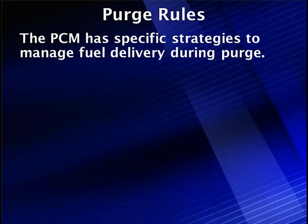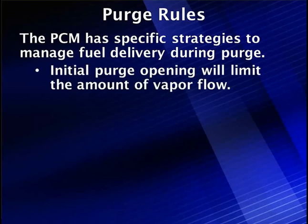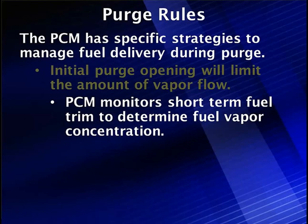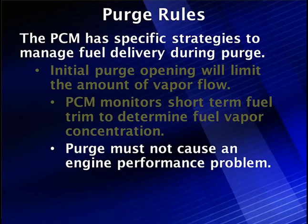The PCM has specific strategies about running purge. We're going to run purge in conjunction with fuel delivery. We can't just turn purge on, dump fuel vapor in, and hope the car runs okay. The initial purge opening will limit the amount of vapor flow until the PCM can correct for it. The PCM is going to monitor short-term fuel trim to determine the vapor concentration coming out of the canister. This vapor could be fuel vapor or fresh air — we don't know what's in the canister until we try. Purge must not cause an engine performance problem.